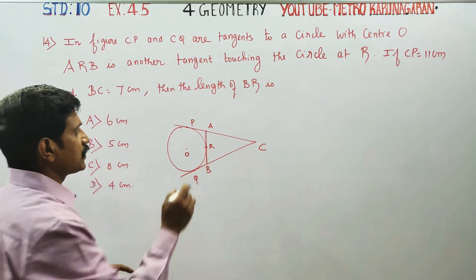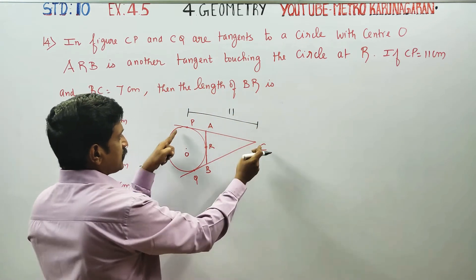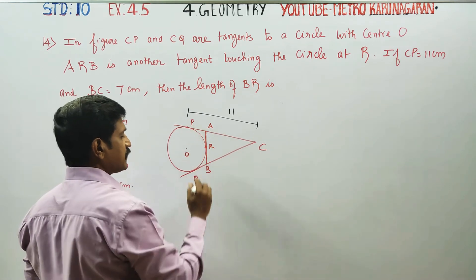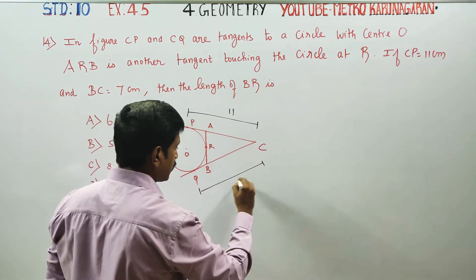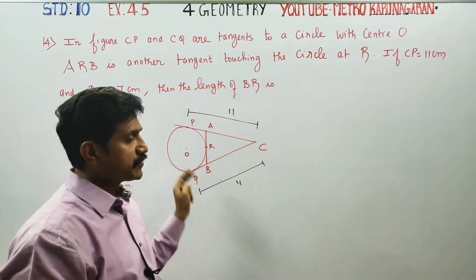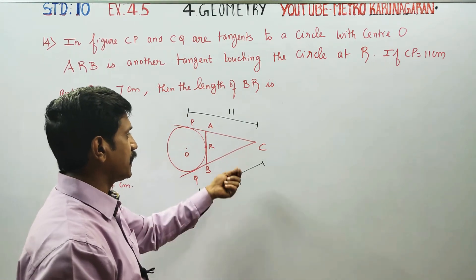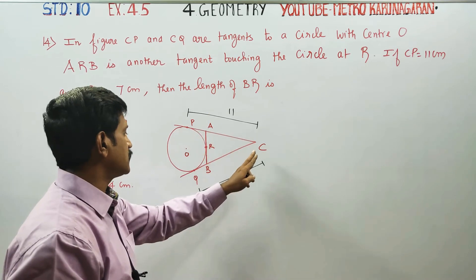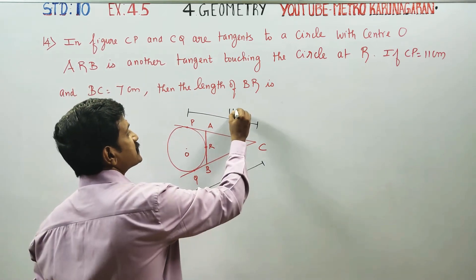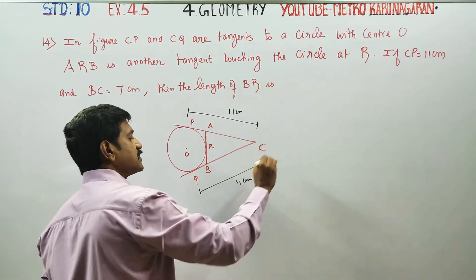CP is equal to 11. Two tangents drawn from a circle are of equal length, so CQ is also equal to 11.